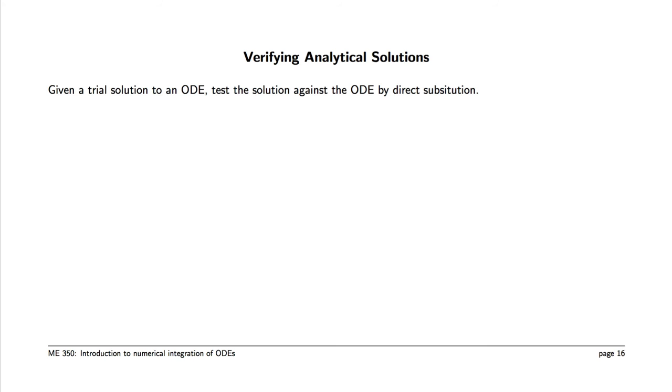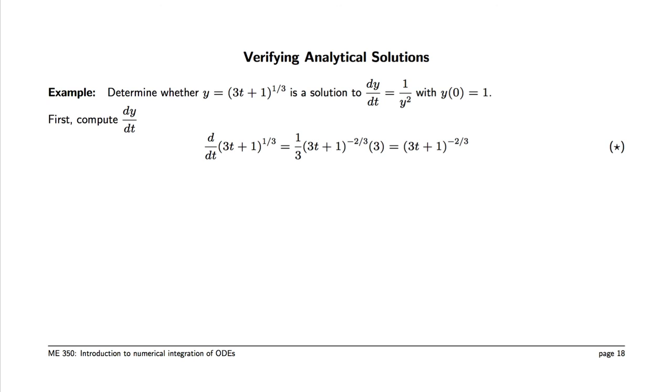We're now going to show quickly how you can verify that a solution or a trial solution is indeed a solution to an initial value problem. For example, let's consider whether y equals (3t + 1)^(1/3) is a solution to the differential equation dy/dt equals 1/y^2 with an initial condition y(0) = 1. The first step is to evaluate the derivative of the proposed solution, and we get equation star. The derivative simplifies to (3t + 1)^(-2/3).